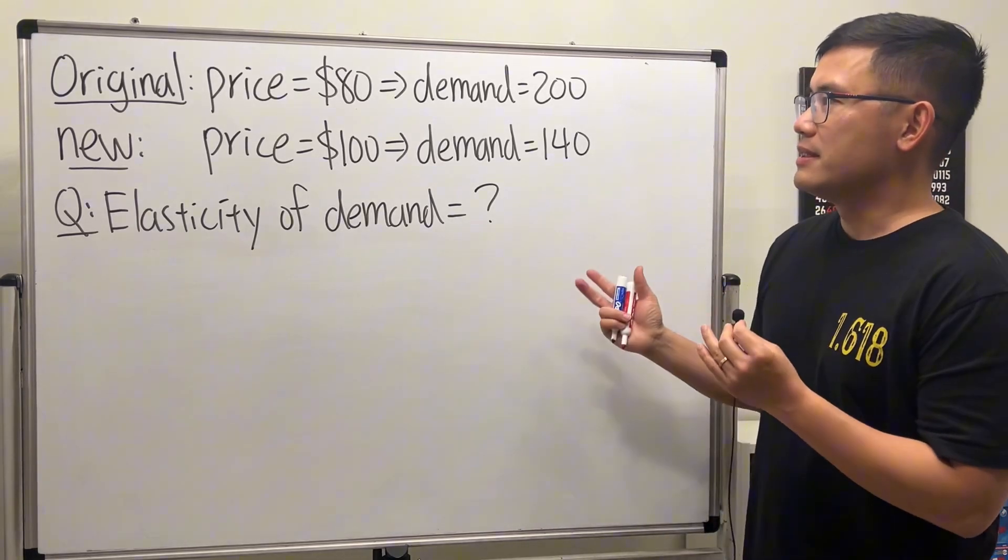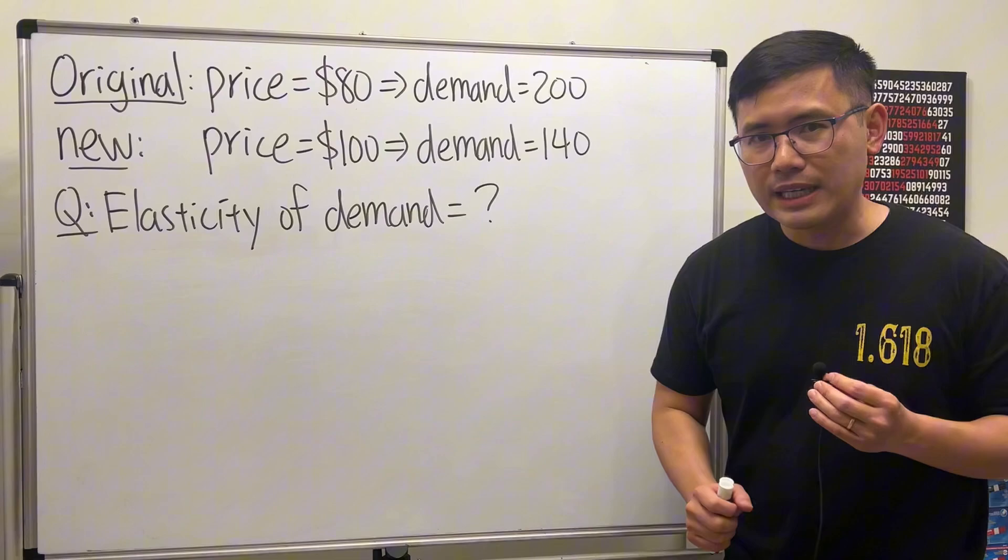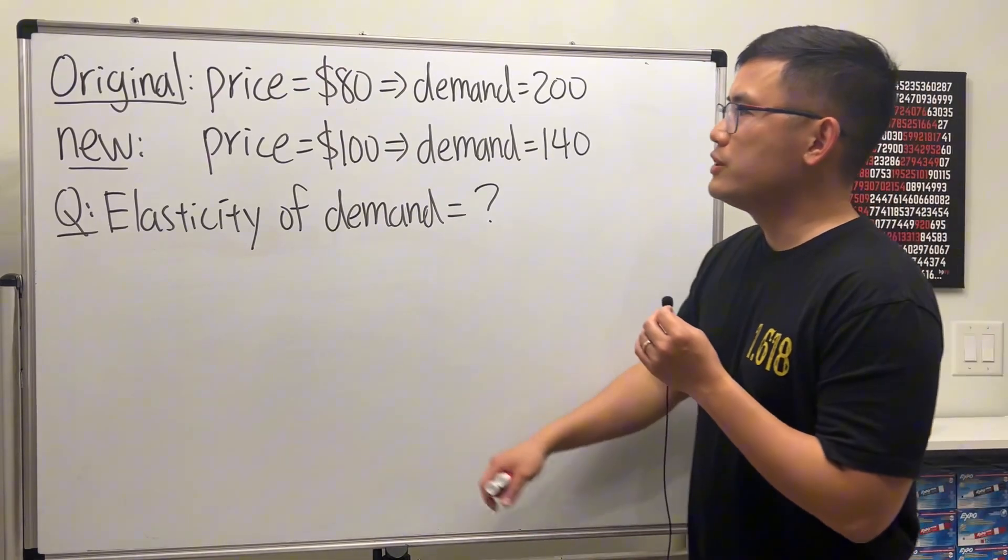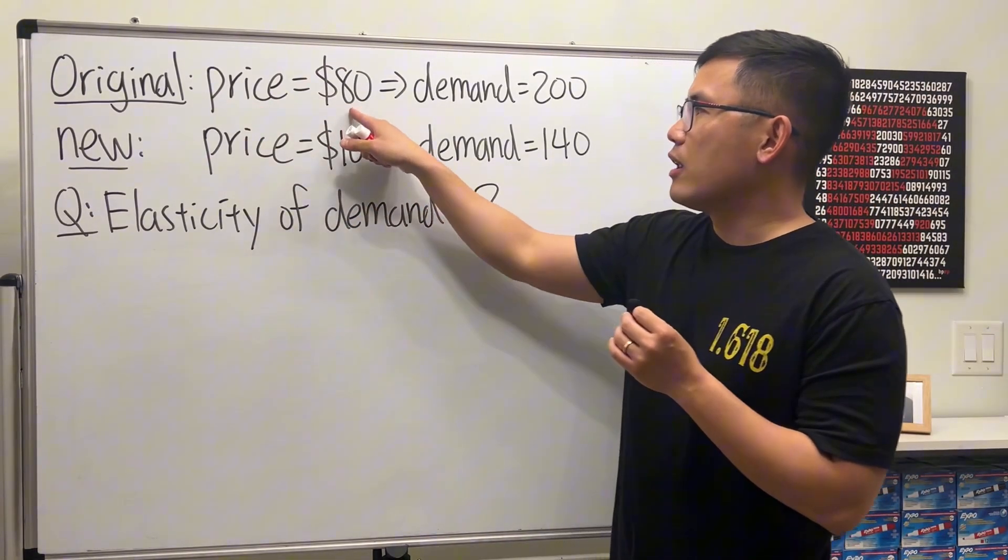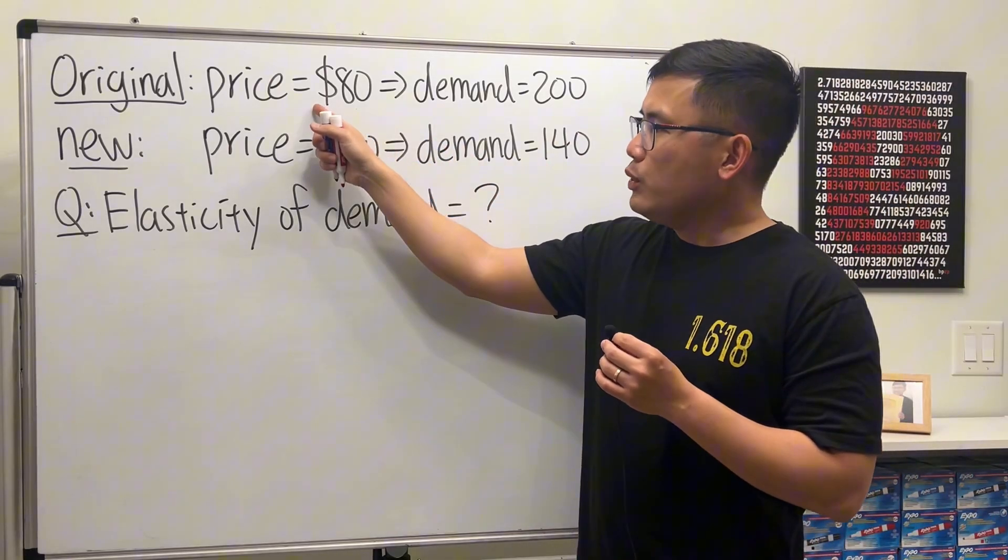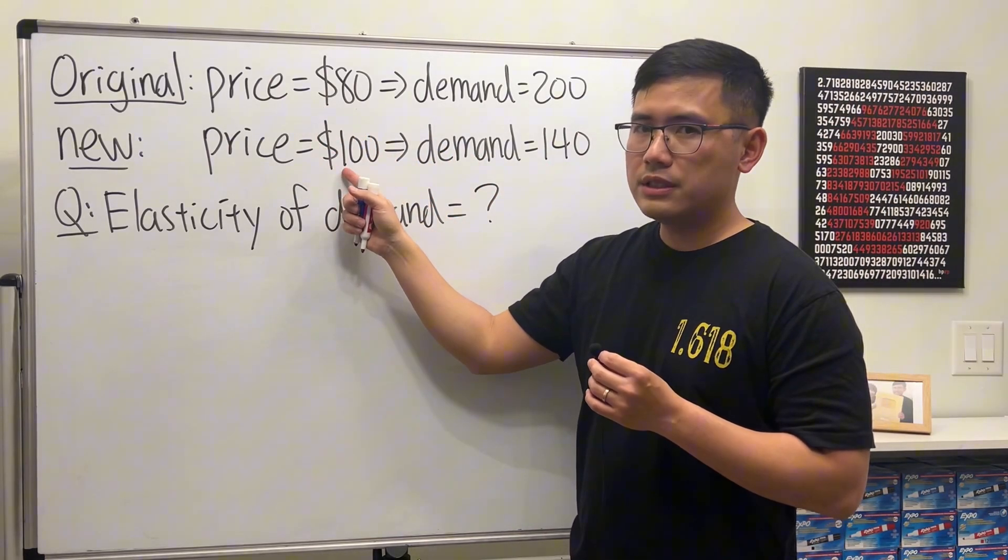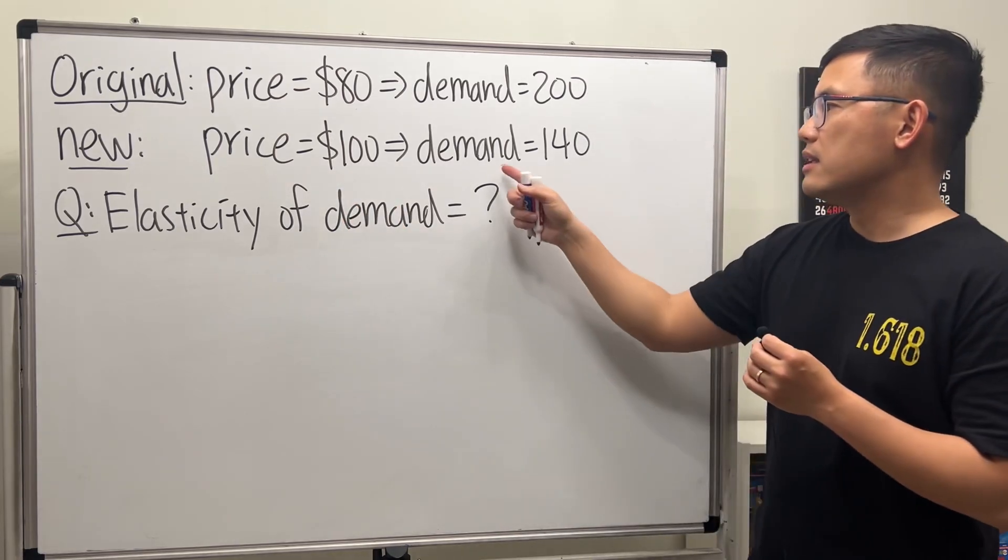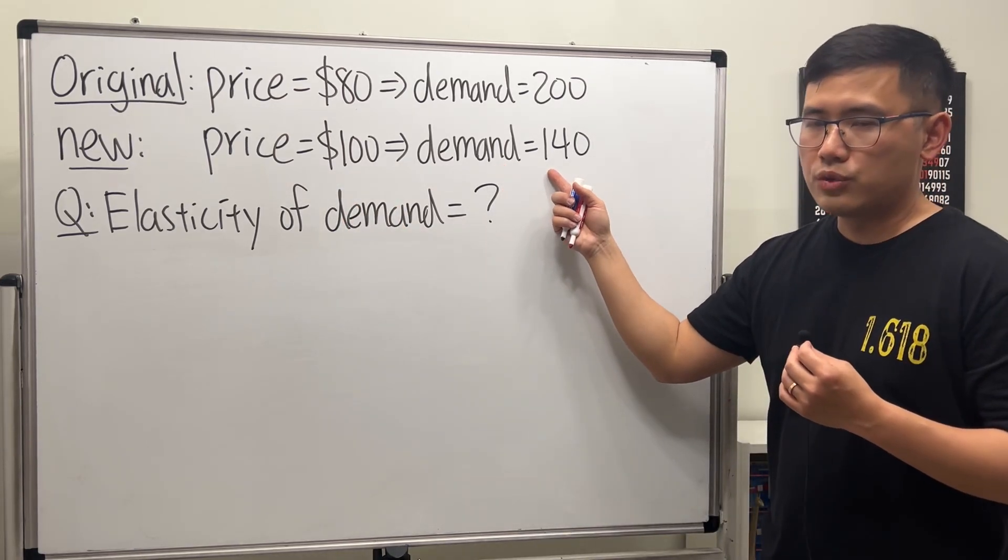Here's the situation. Let's say we are selling graphing calculators. Originally if the price is $80, then the demand is 200. Then if we increase the price to $100, of course the demand will drop and the demand is going to be just 140.